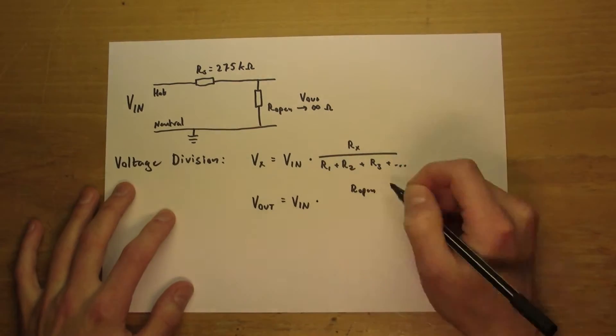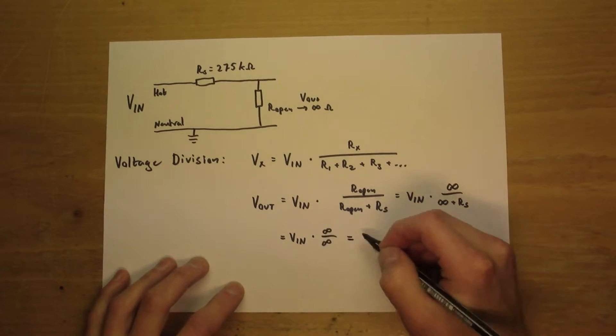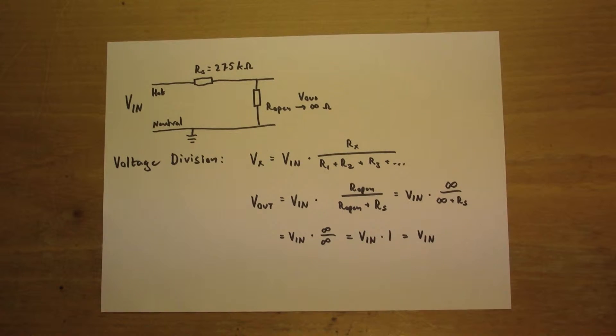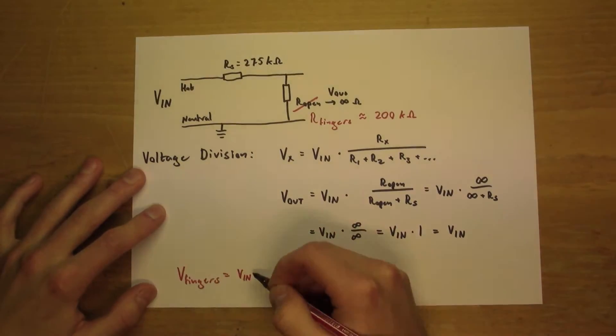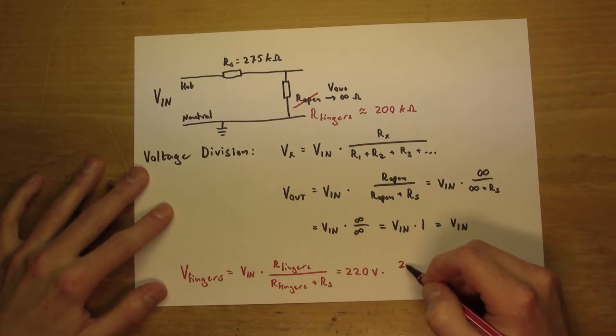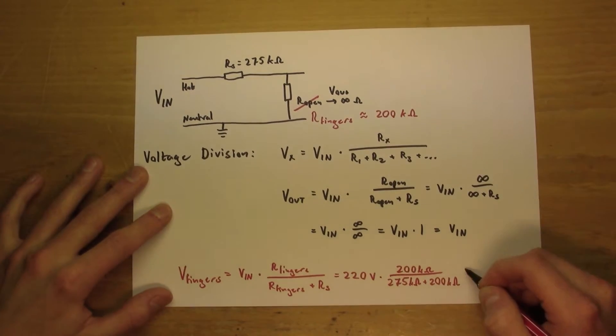By putting in our values we can see that the output voltage is the same as the input voltage, no matter what series resistance. If we look at the circuit when it's closed by my fingers, which has a resistance of about 200 kilo ohms, we can see that the voltage drop over my fingers is only about 93 volts.